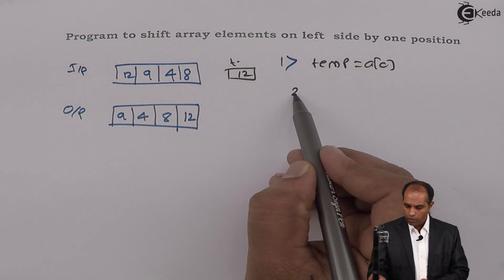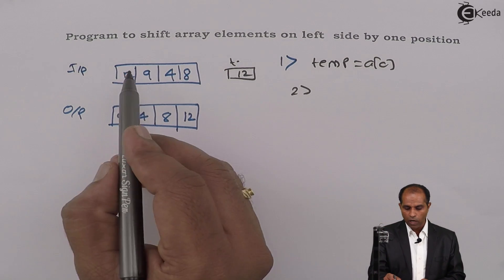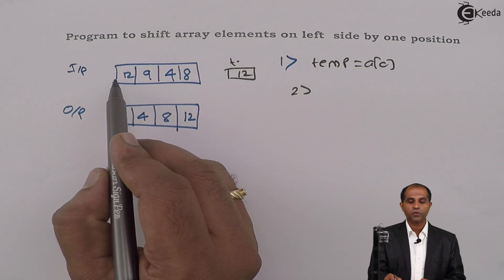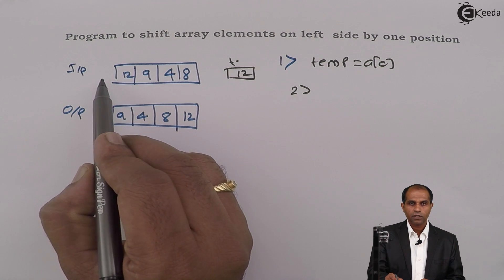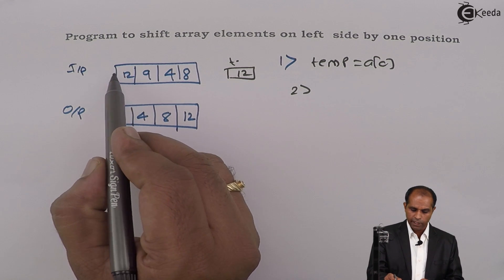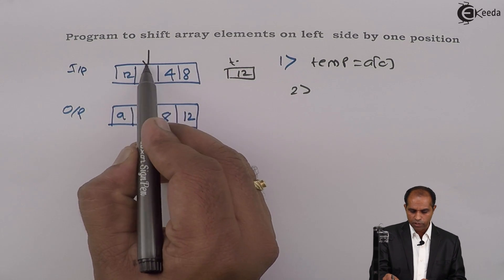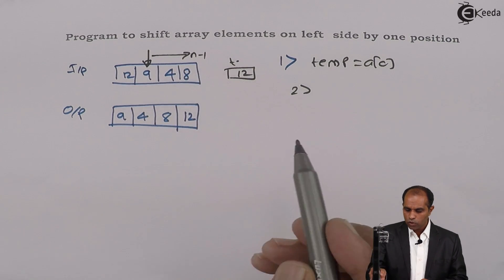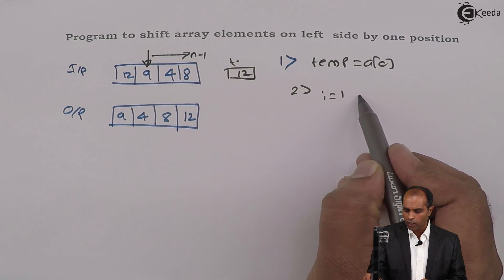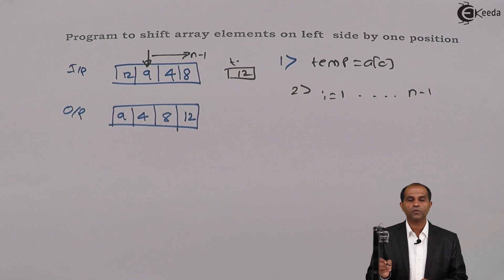Right? Now, a[0] goes to temp. So now, I do not have regrets if someone overrides 12. So I have to identify an index next to this or prior to this. As such, I do not have an index prior to this. I have index next to this, that is at 9, and move on to the other side, that is n minus 1.